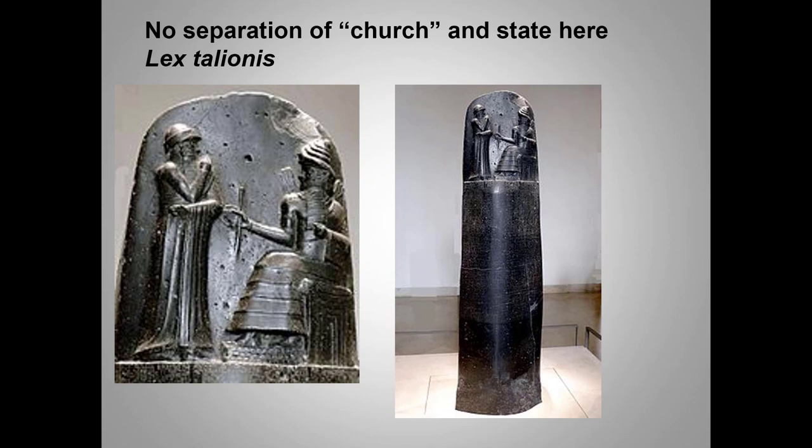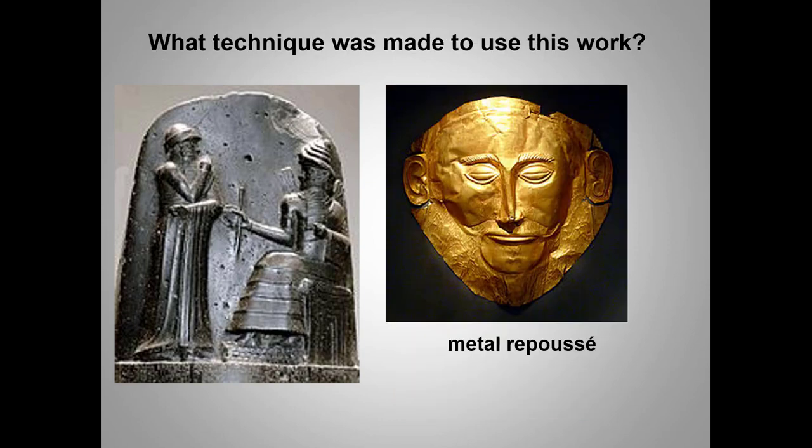One of the wrong answers about this work will be 'metal repoussé' — a sculptural technique, neither purely additive nor subtractive, where thin sheets of metal are punched into a shape. The gold face of Agamemnon is a famous example, though not a required work. This is mentioned so you won't worry when you see that unfamiliar term on the test. By May, you will know a lot more art vocabulary.